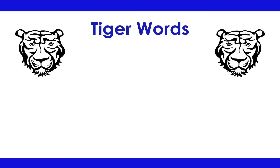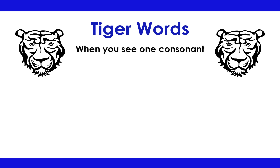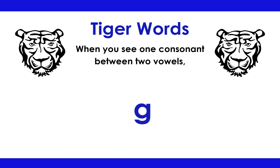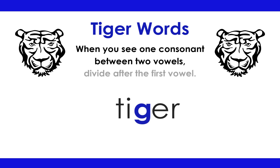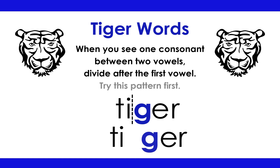Tiger Words: When you see one consonant between two vowels, divide after the first vowel. Try this pattern first. Tiger.